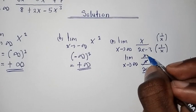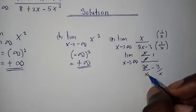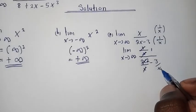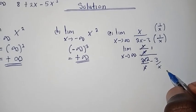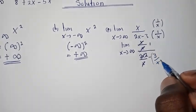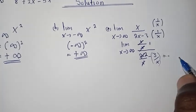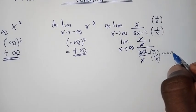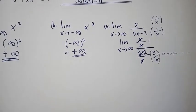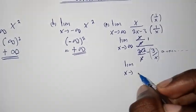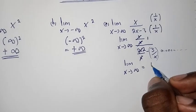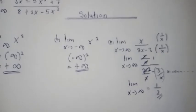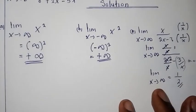Notice that X over X cancels to give 1, and 2X over X cancels to give 2. If we place infinity in 3/X, since infinity is a very big number, 3 over infinity approaches 0, so we aren't going to add it. Therefore the limit as X is approaching infinity gives us 1 over 2.